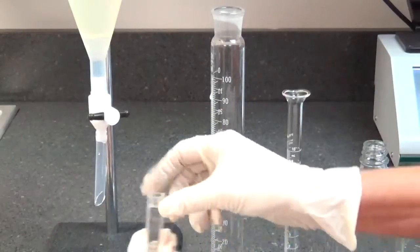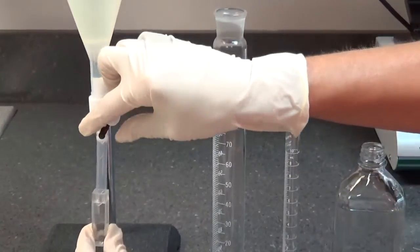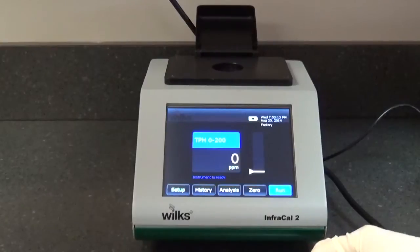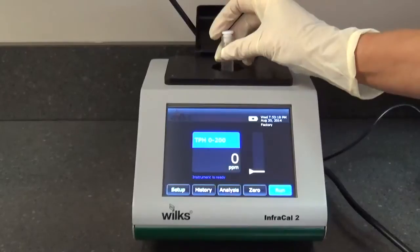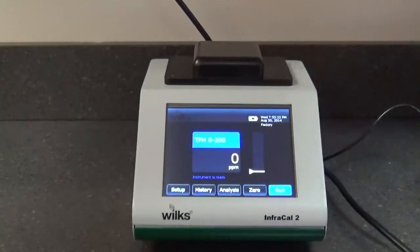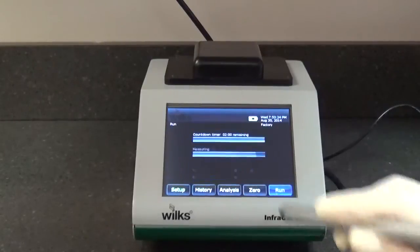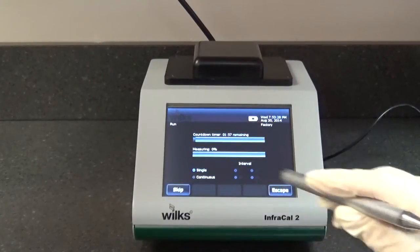Fill the cuvette with solvent extract. Place the cuvette into the holder on the InfraCal 2 analyzer with the frosted side facing front. Close the cover and select run. After the countdown timer and the measurement time, the result will be displayed.